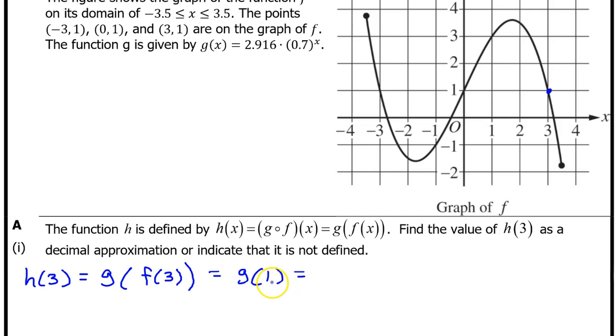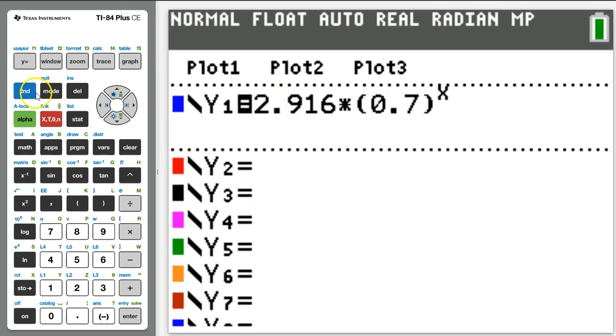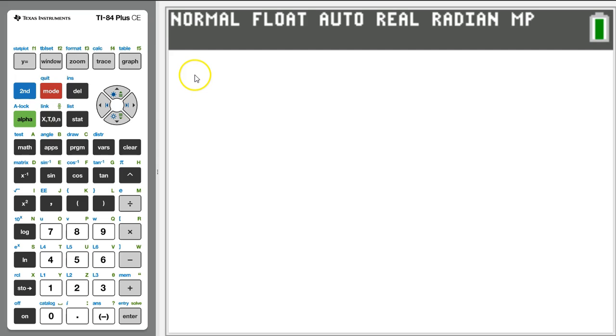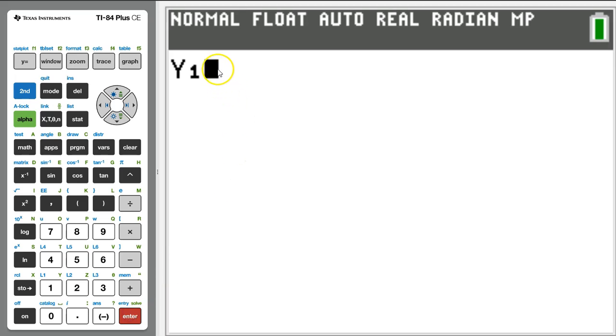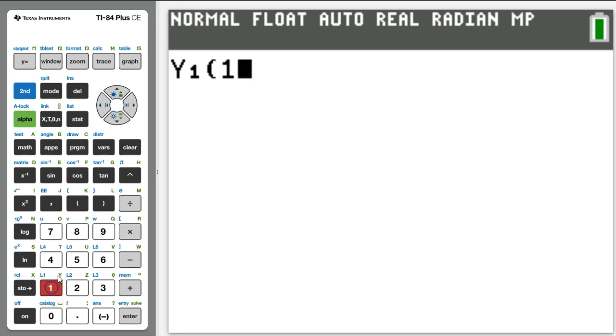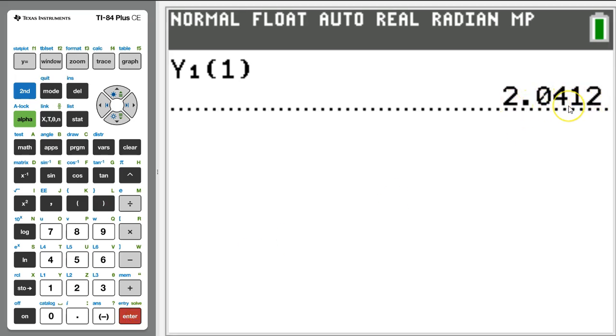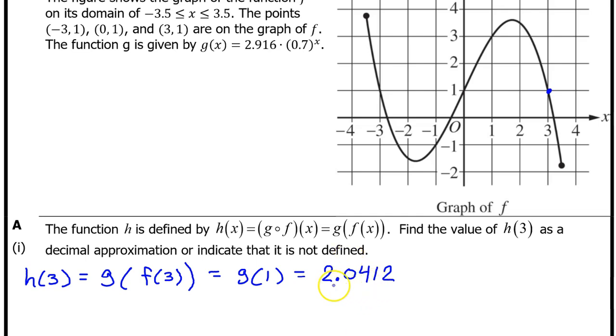We need to evaluate g at 1. But we just entered function g as y1. So really we need to evaluate y1 at 1. Quit your way out of here by hitting 2nd quit. You can make y1 show up by hitting alpha, trace, and enter because y1 is already selected. We can evaluate y1 at 1 by putting 1 in parentheses right next to the y1 and hitting enter. Kabam! 2.0412. The college board will accept 3 decimal places. But some students try to round to 3 decimal places and then they round wrong and lose a point for no reason. So my strong recommendation is always use 4 decimal places and never try to round. So that's it for A part 1.